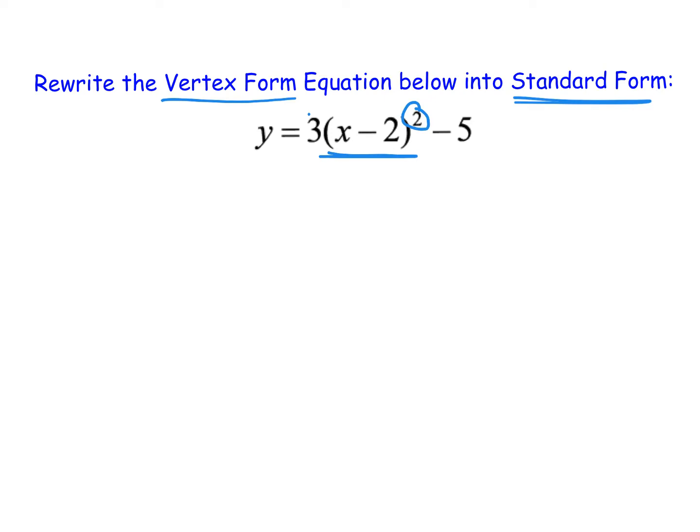So the first thing we really need to address is this squared around the parentheses. We know from talking about polynomials previously that parentheses squared really is implying that we have x minus 2 times itself. That's really what the definition of squared is.